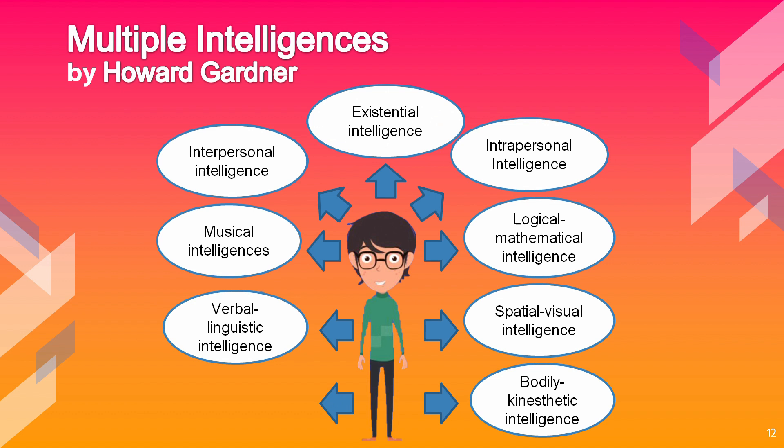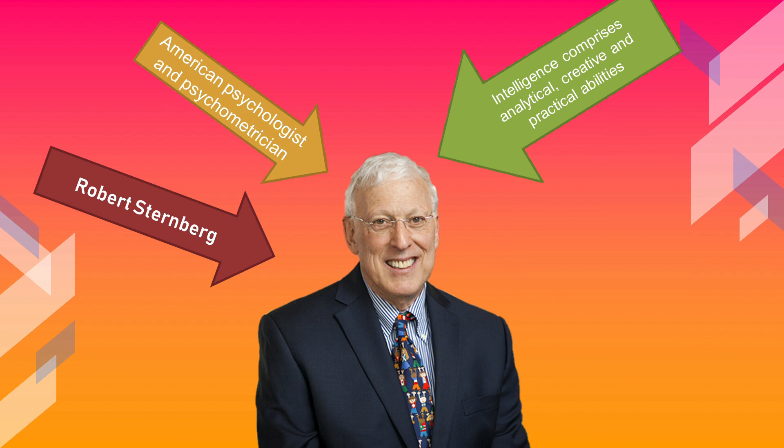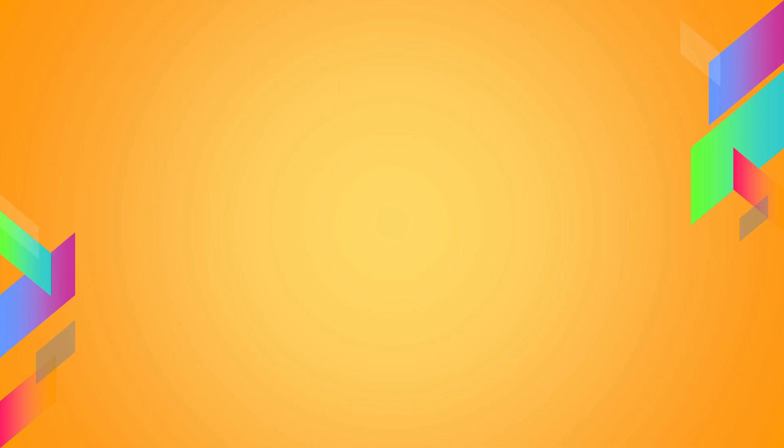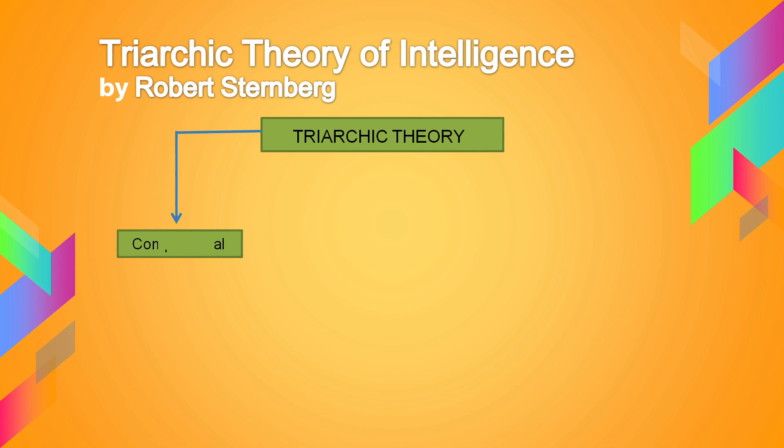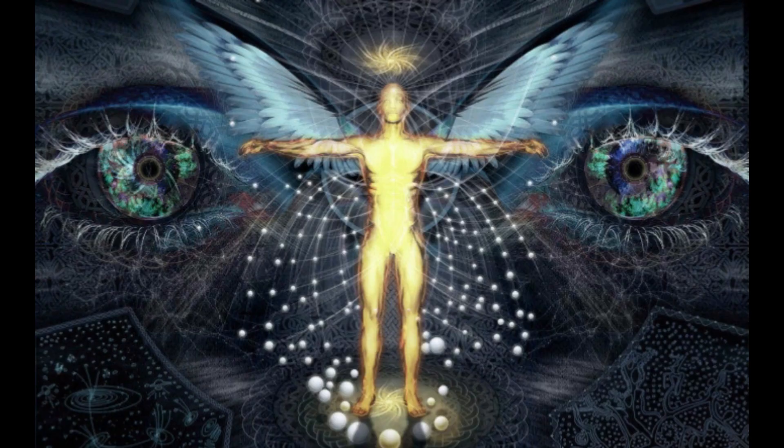This is Robert Sternberg. In 1985, he proposed the Triarchic Theory. In analytical thinking, we try to solve familiar problems by using strategies that manipulate the elements of a problem or the relationships among the elements, such as comparing and analyzing. In creative thinking, we try to solve new kinds of problems that require us to think about a problem and its elements in a new way, such as inventing and designing. In practical thinking, we try to solve problems that apply what we know to everyday contexts, such as applying and using.